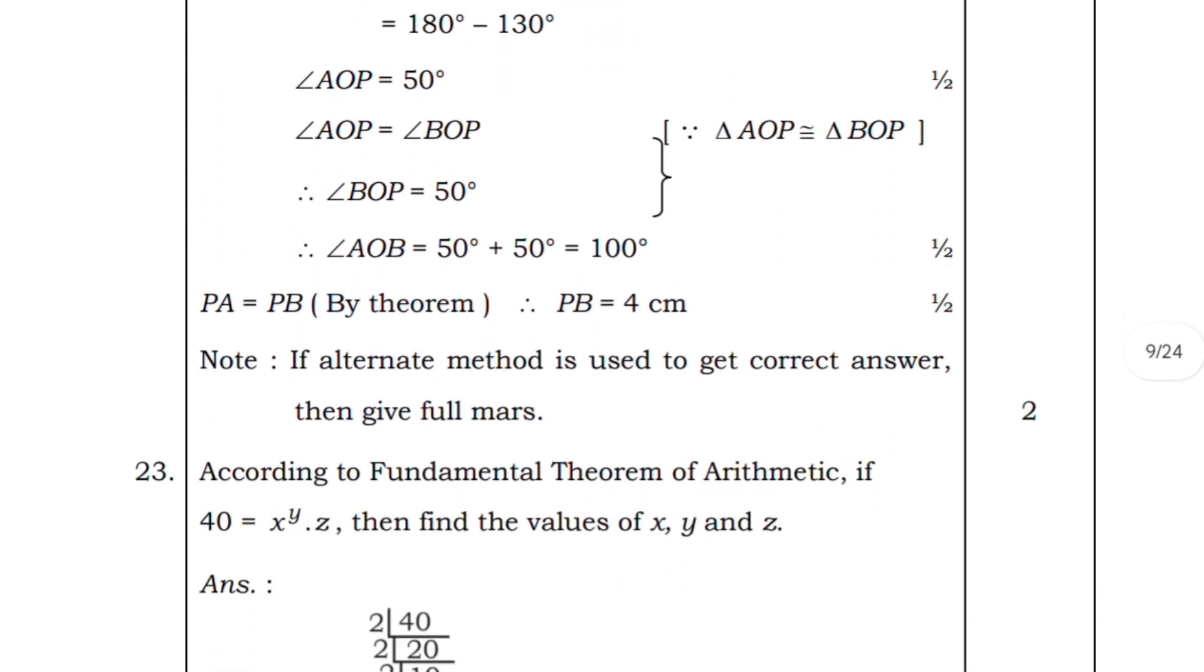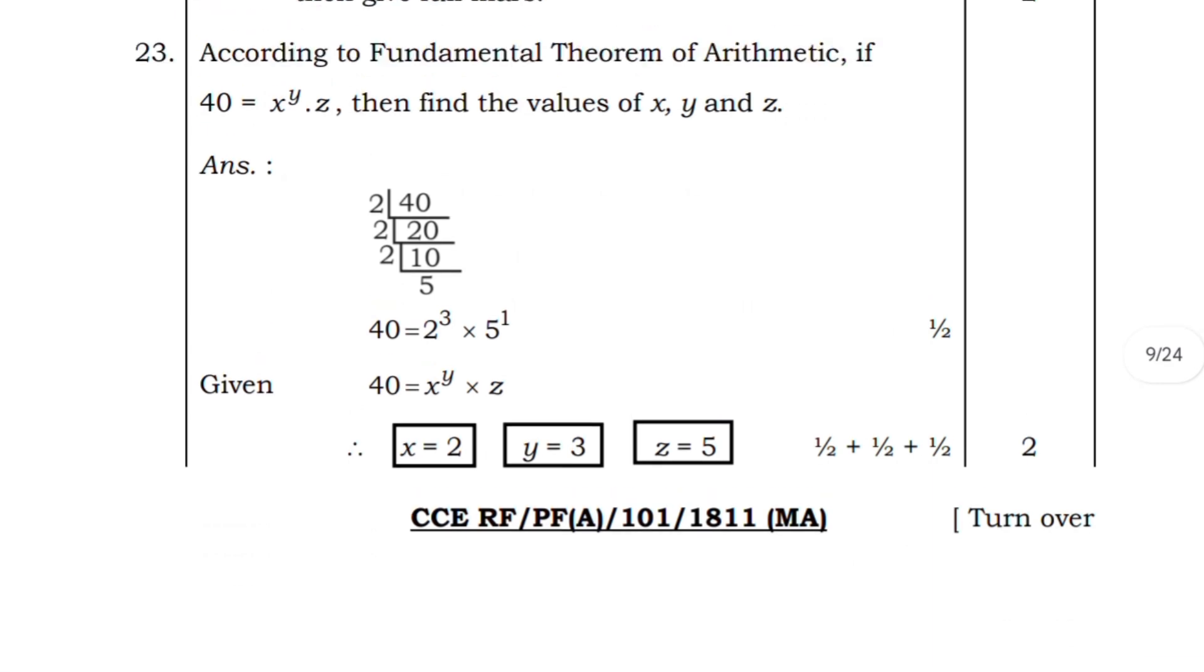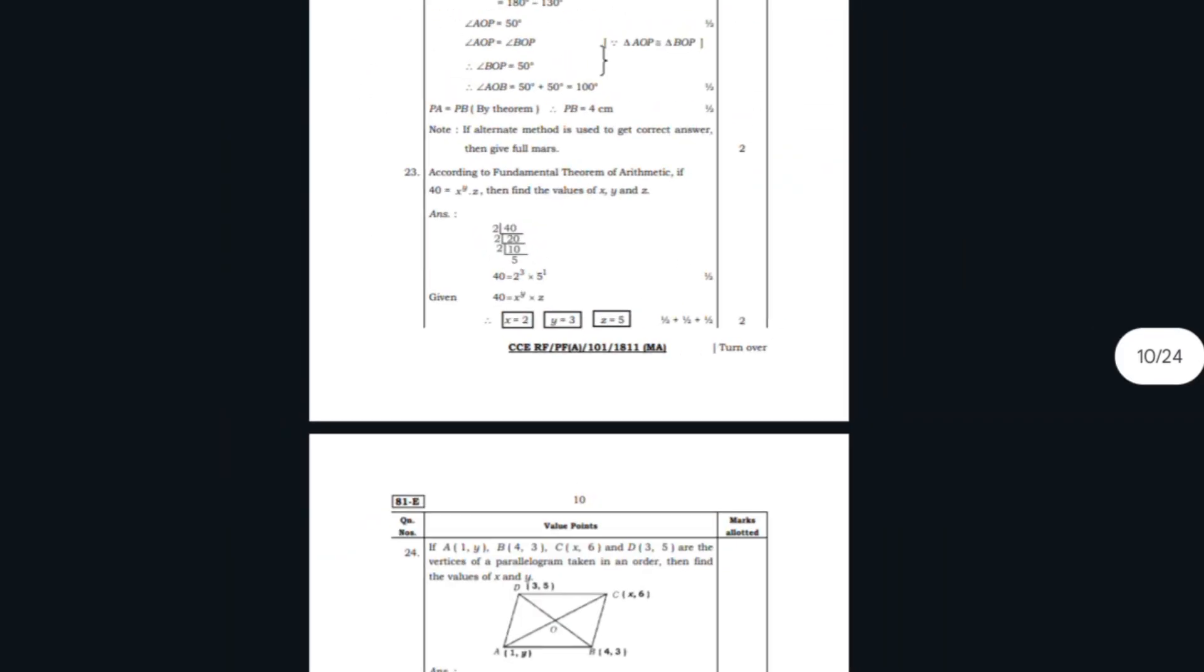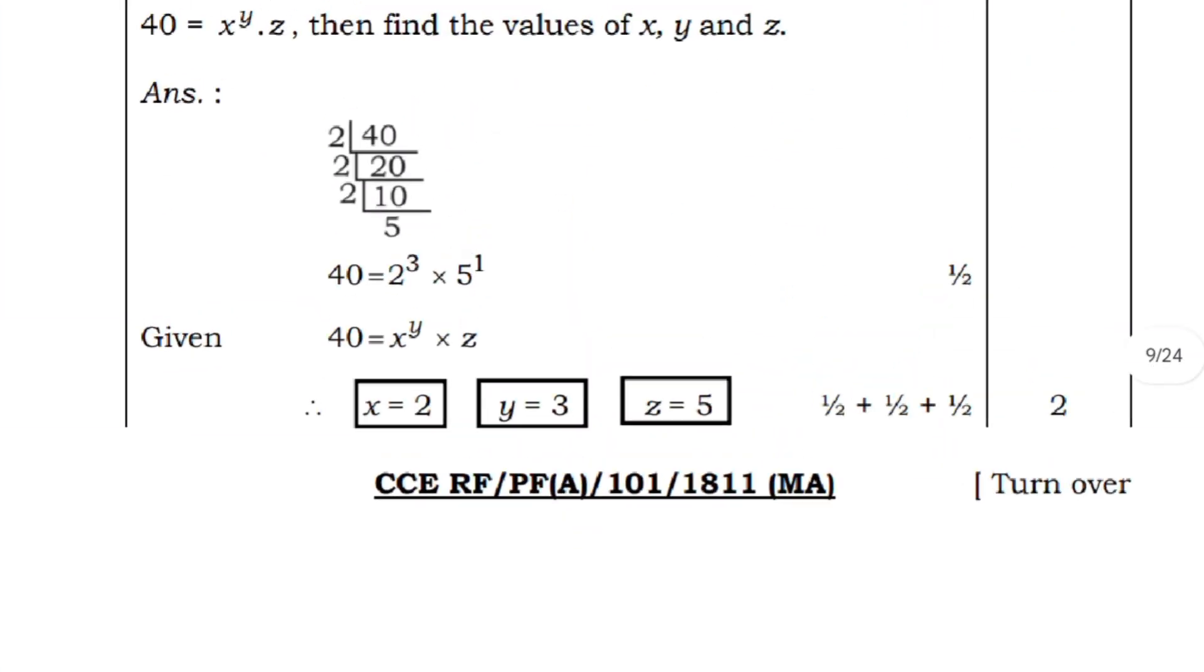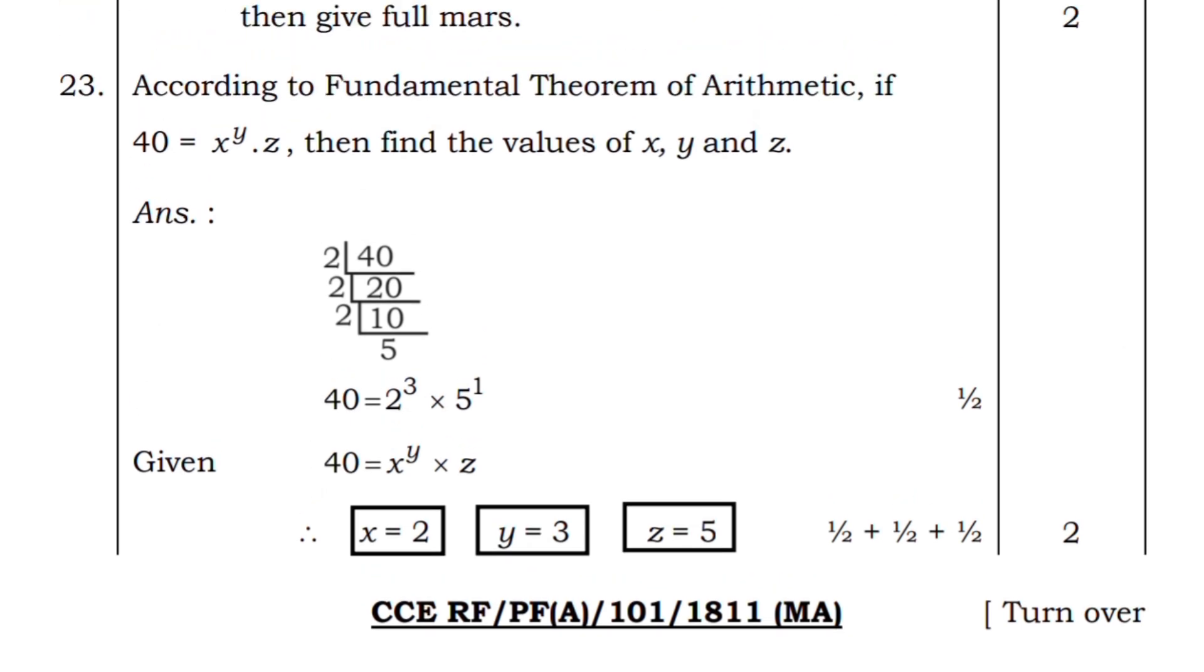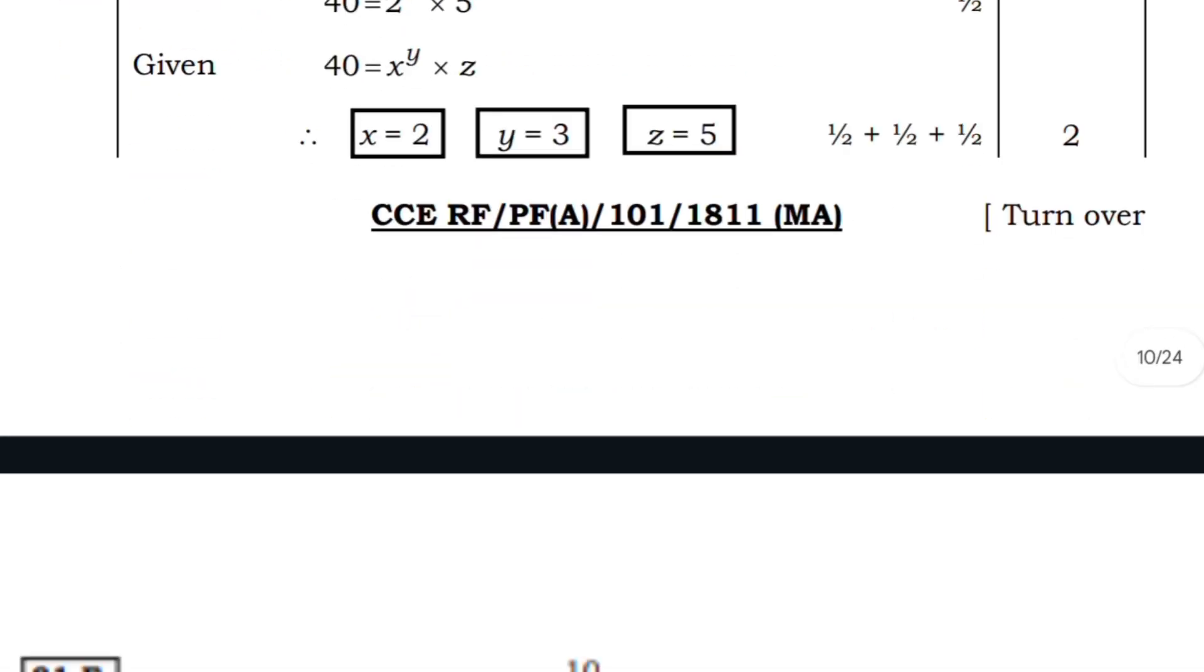This is from triangle lesson and also from real numbers. Question number 23 they asked for the first time - this is from real numbers but this time they twisted the questions. They asked for all the variables as x, y, z. First they were asking only for x variable by giving one single number, but this time they have twisted the question a little bit.